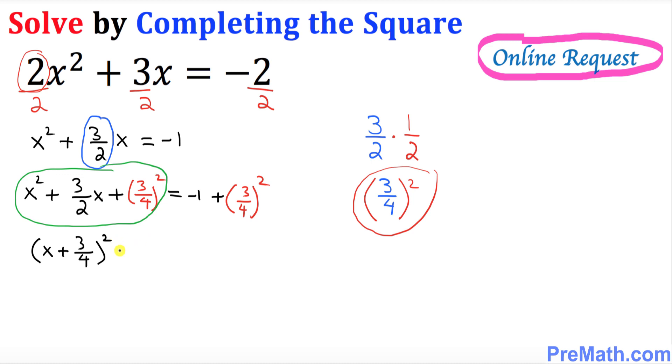And on this side, this negative 1 could be written as negative 1 over 1 plus 3 over 4 squared is same as 9 over 16.